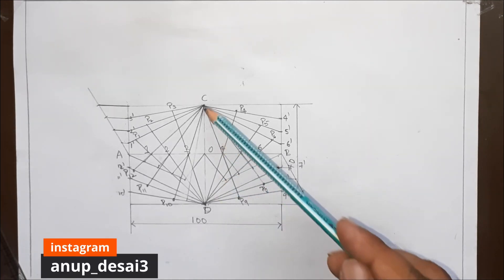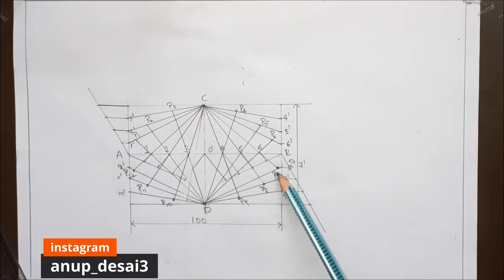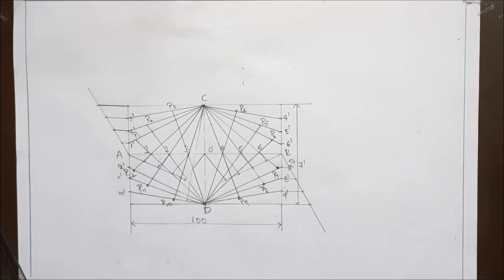Now after joining the lines from the point C, we get the points P7, P8, P9, P10, P11 and P12. So now we have got all the points, let's trace the curve through these points.